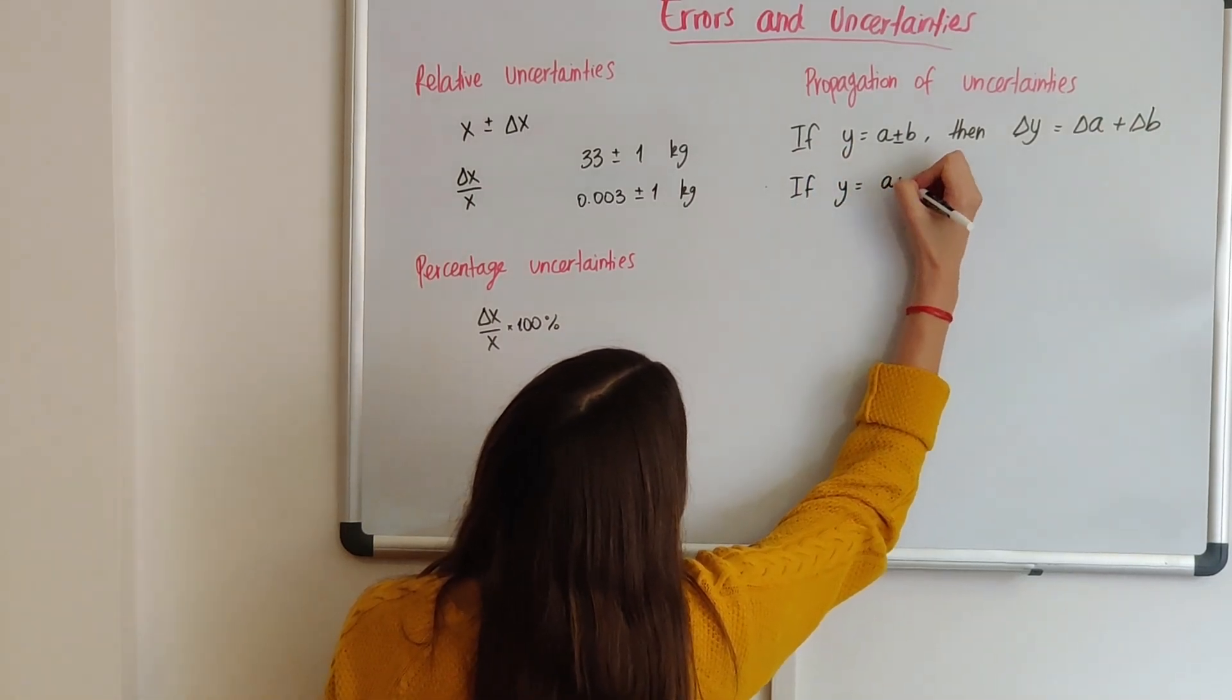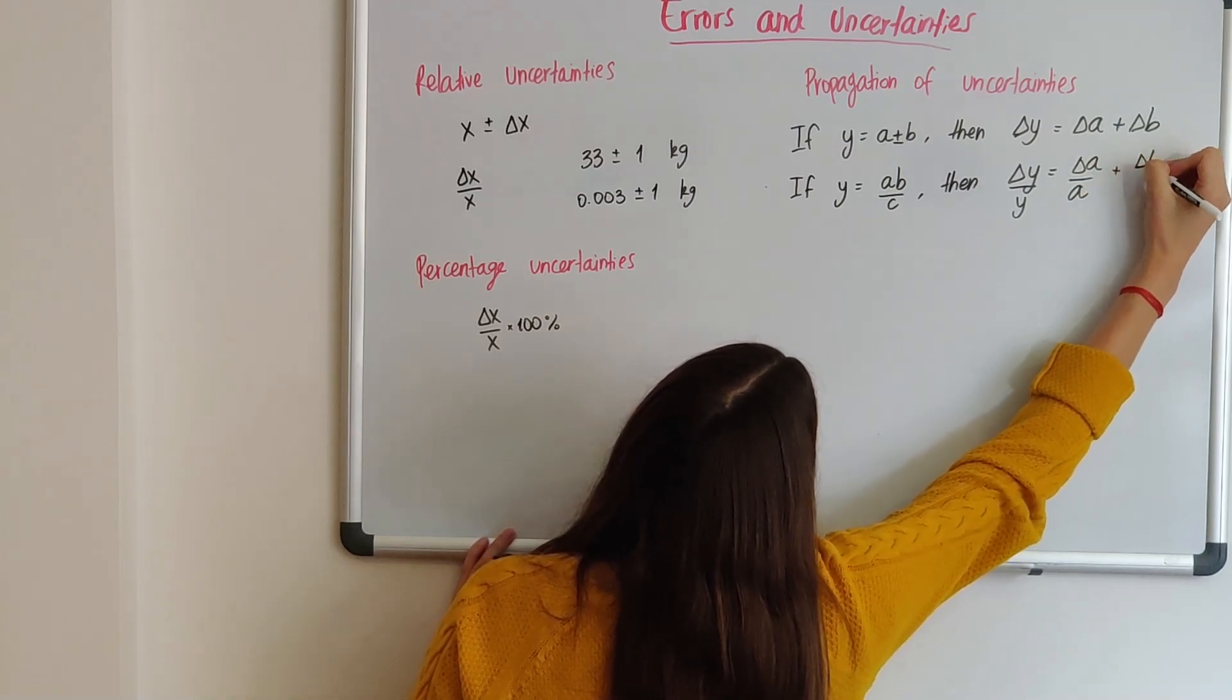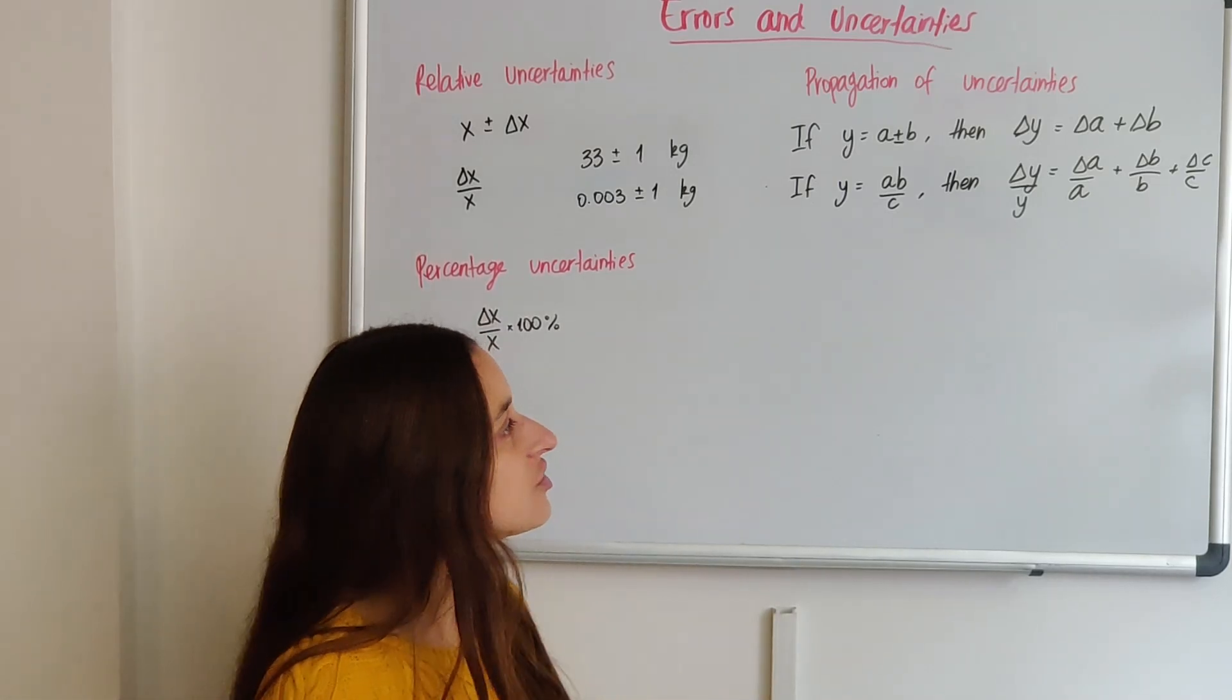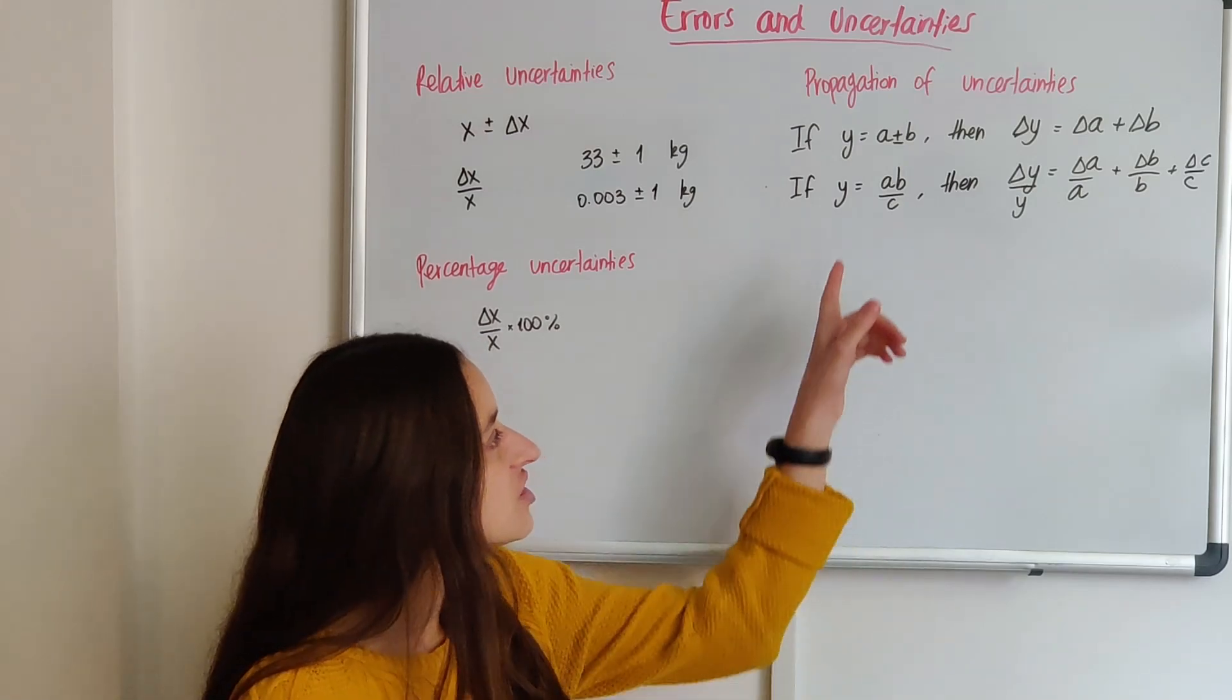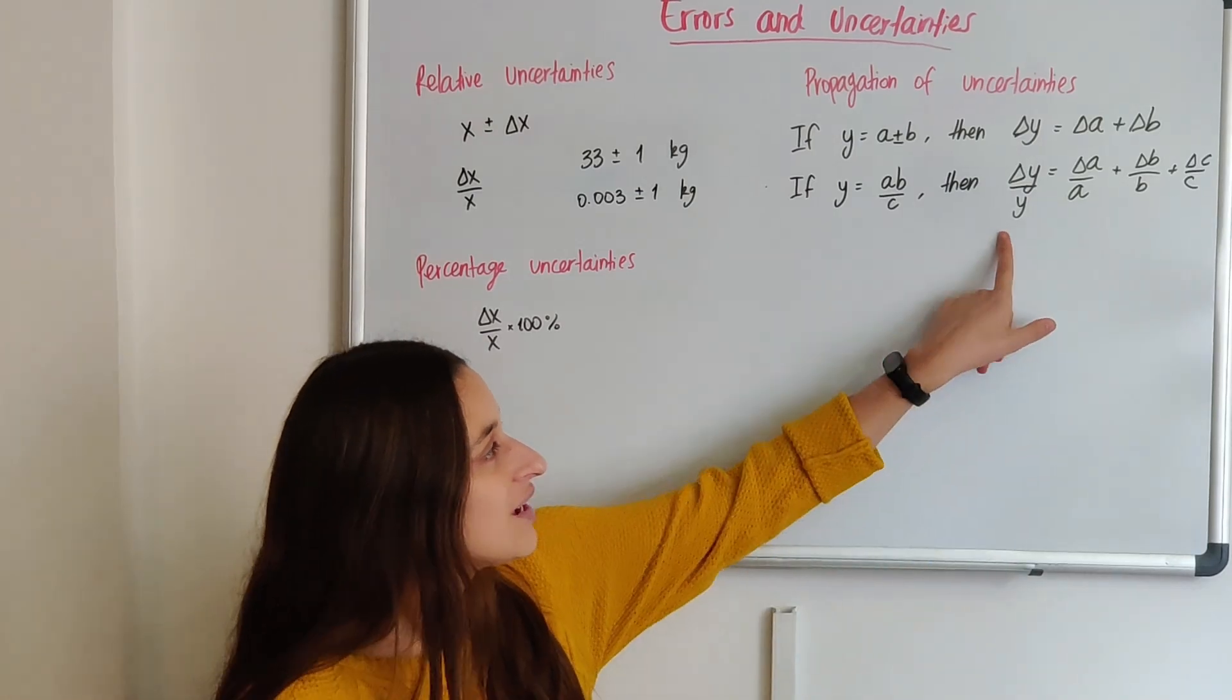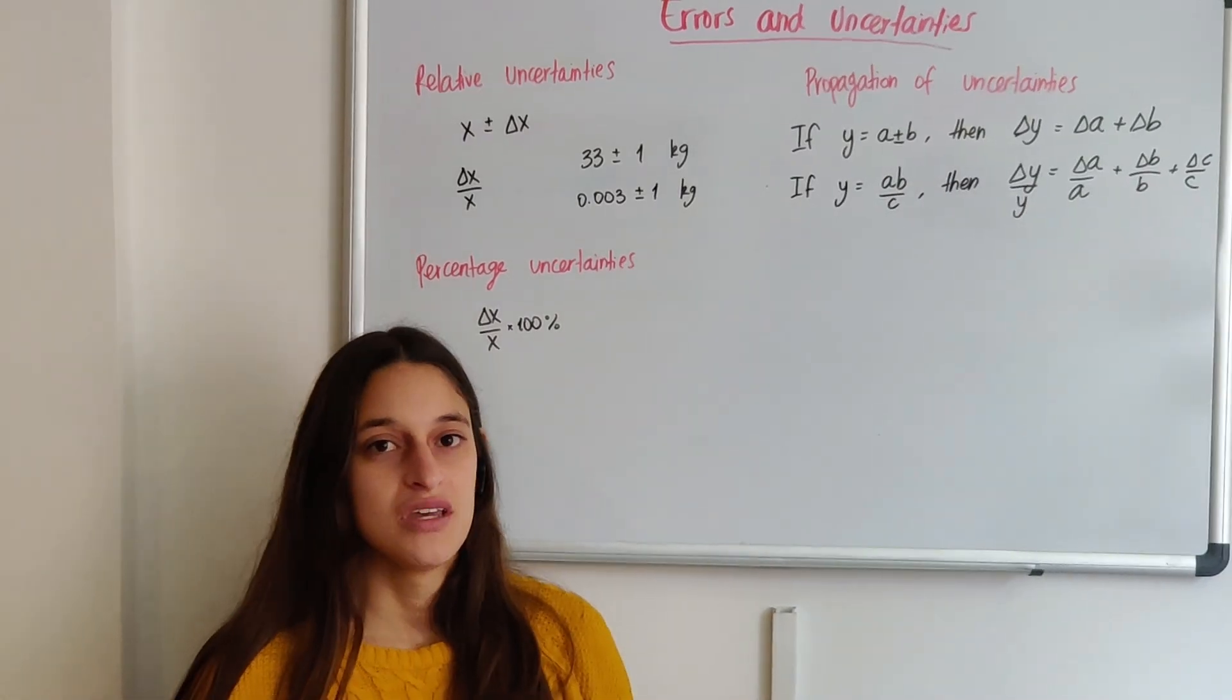Let's go on to the second one. If y equals a times b over c, delta y over y equals delta a over a plus delta b over b plus delta c over c. So this looks more confusing, but it's really just kind of the same thing. Here we measured three possible variables, a, b, and c, with their uncertainties. But we don't know the uncertainty of y. So to calculate the uncertainty in y, we need to add the relative uncertainties of a, b, and c. And then since we're solving for delta y, multiply everything by y.